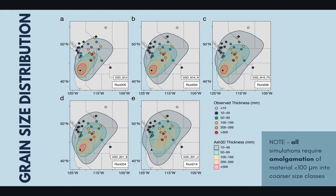Another key parameter I want to briefly highlight is the grain size distribution. Each panel on this slide corresponds to a simulation that used a slightly different grain size distribution, from the coarsest shown in panel A to the finest shown in panel E. What you can see by comparing these plots is that where we get deposition and the breadth of the deposit is very sensitive to the grain size distribution used — so it's a really key parameter that definitely requires careful consideration when designing the grain size distribution for your model runs.